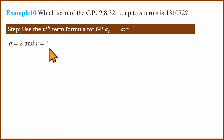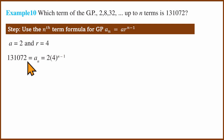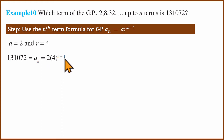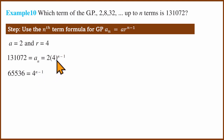We substitute: a is 2, r is 4, and the nth term is 131072. Dividing both sides by 2, we get 65536 on the left-hand side, which equals 4 to the power n-1 on the right-hand side. We recognize that 65536 is 4 to the power 8.